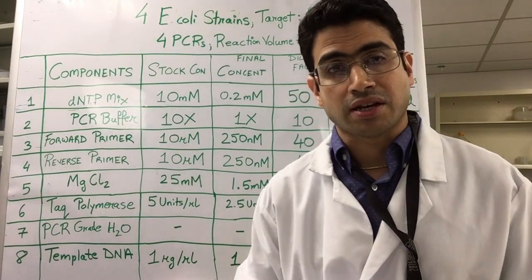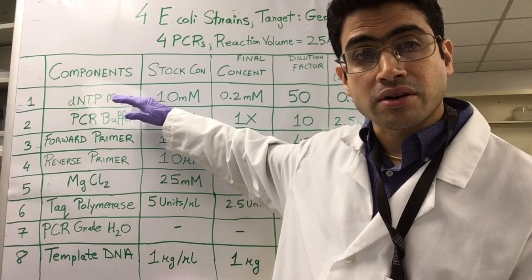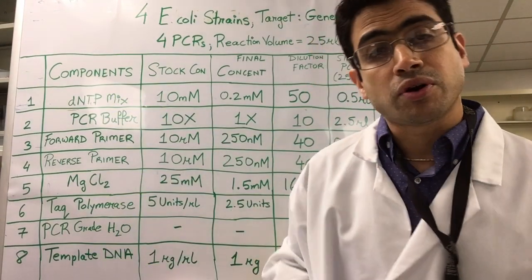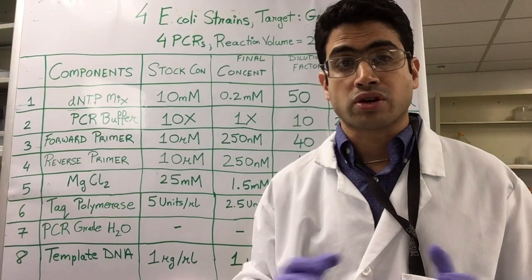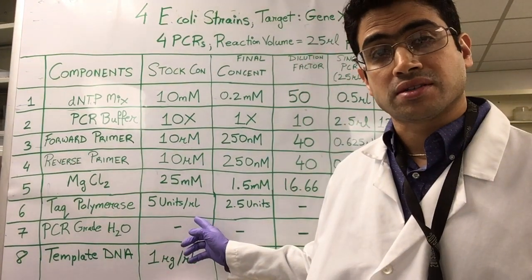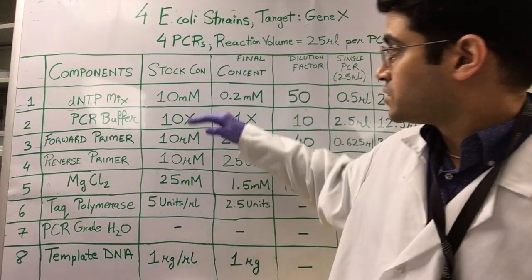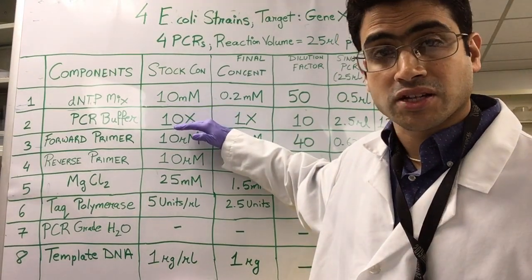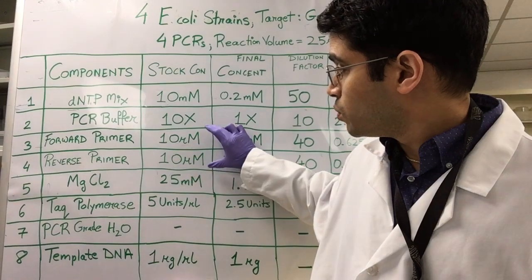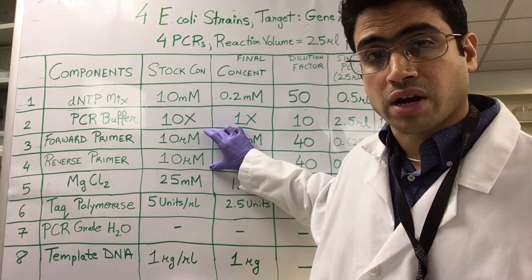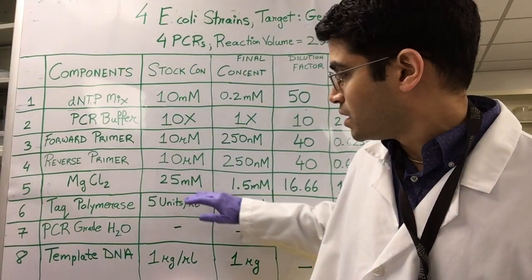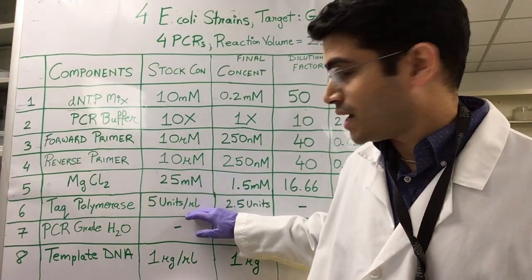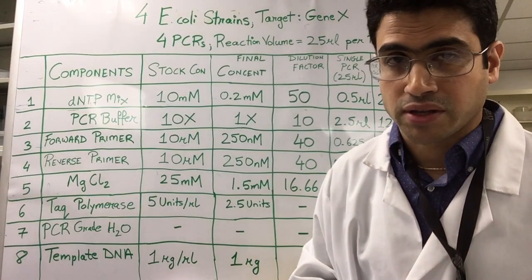Okay, so let's take a look at some of the math. Each PCR tube is going to have each of these components. These components have been stored as working stocks, the concentrations of which you can see in this column over here. So we have a 10 millimolar stock of the DNTP mix, a 10x PCR buffer, the forward and reverse primers as 10 micromolar working stocks, the magnesium chloride at 25 millimolar, and the Taq polymerase at 5 units per microliter.